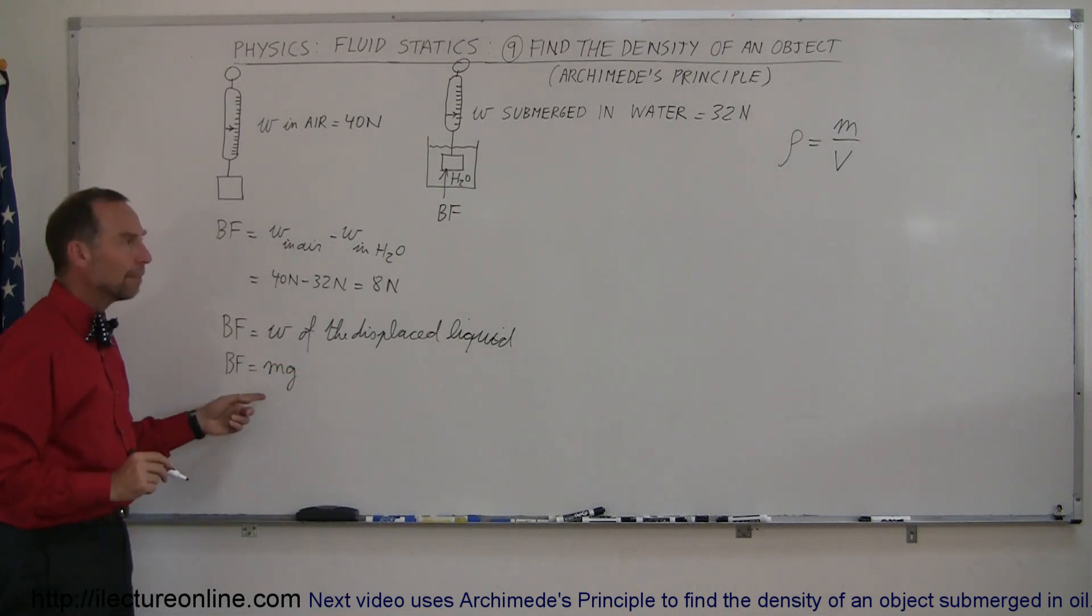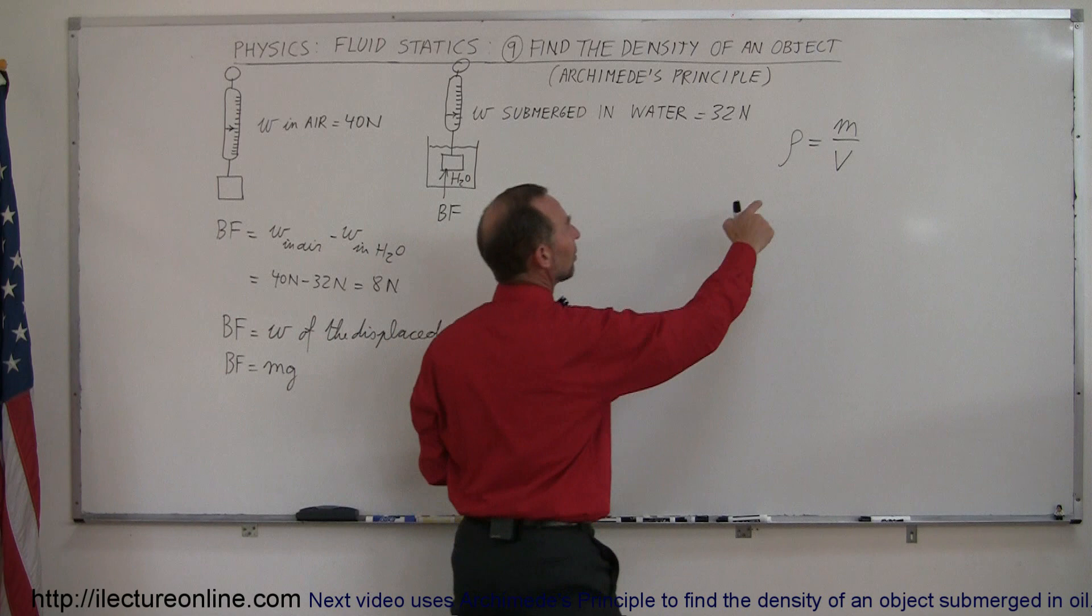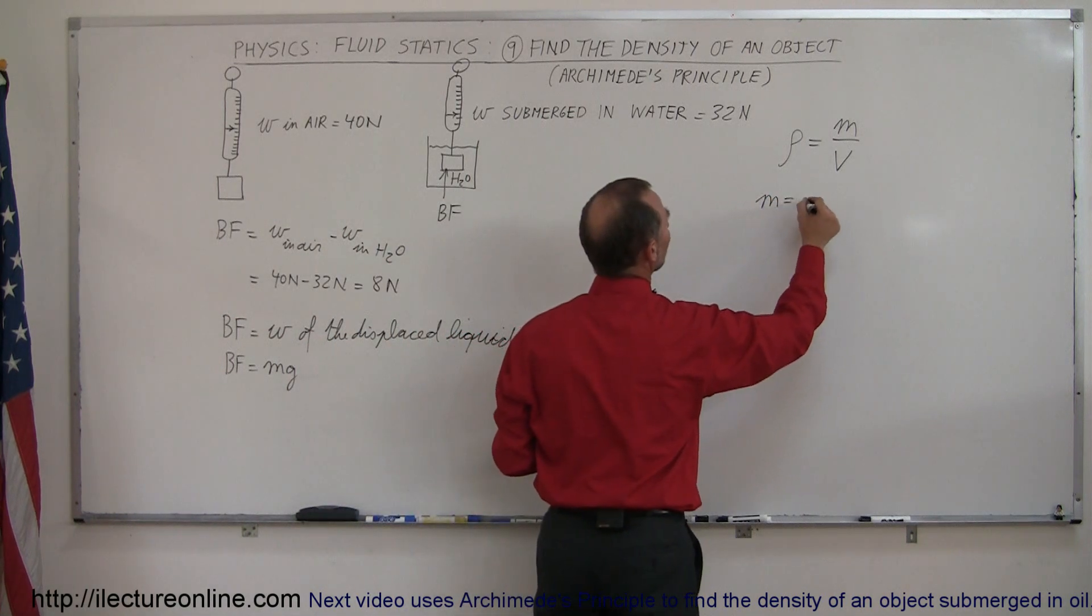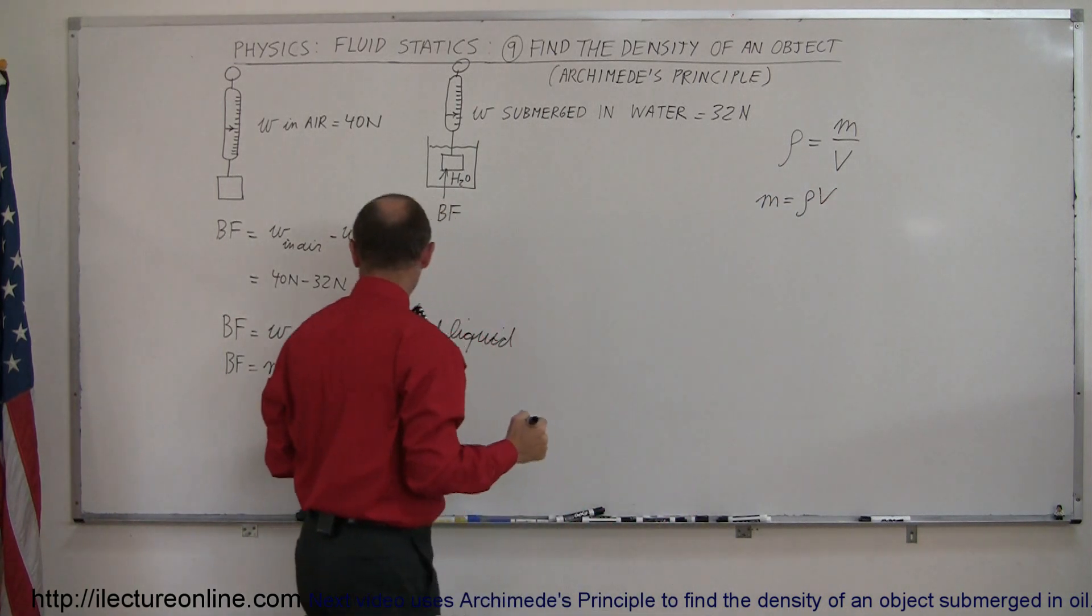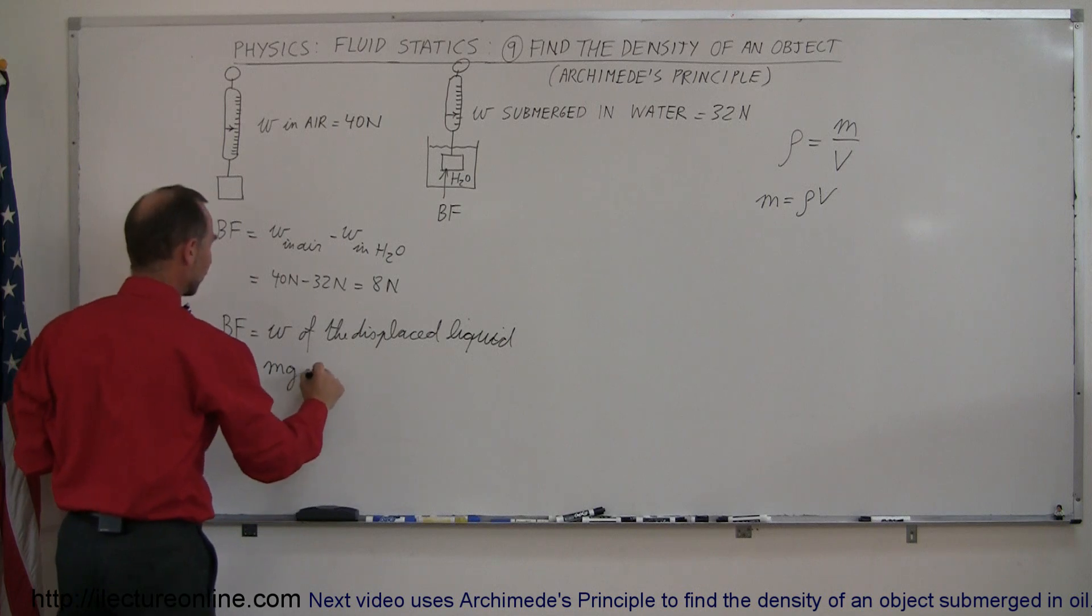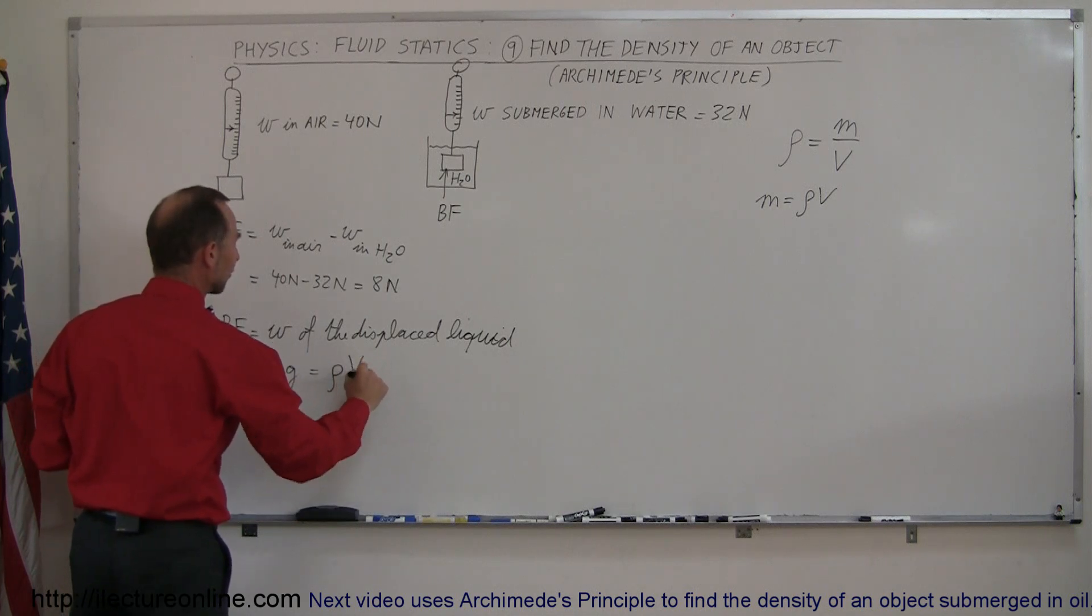And then we can replace the m by using the definition of density. We can say that the mass is equal to the density times the volume, and so over here we can say that the buoyancy force is equal to the density times the volume times g.